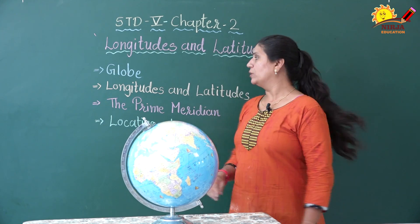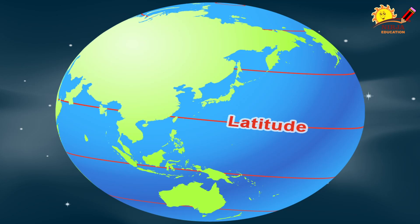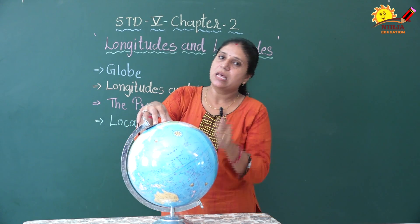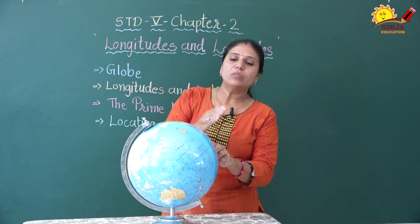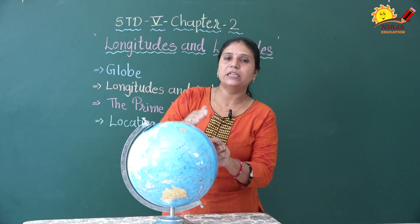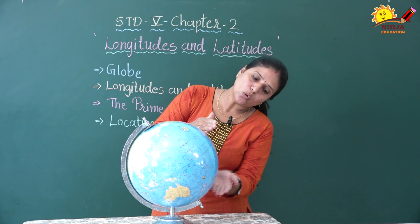Now we are going to know about latitude. What are latitudes? The lines that pass through the east to west side in a horizontal way are called latitudes. The line that divides our earth into two equal halves from the middle is called the equator. From the equator we can see parallel lines going toward the north pole and toward the south pole.